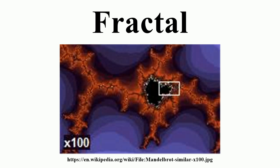One often cited description that Mandelbrot published to describe geometric fractals is a rough or fragmented geometric shape that can be split into parts, each of which is a reduced-size copy of the whole. This is generally helpful but limited. Authors disagree on the exact definition of fractal, but most usually elaborate on the basic ideas of self-similarity and an unusual relationship with the space a fractal is embedded in. One point agreed on is that fractal patterns are characterized by fractal dimensions.